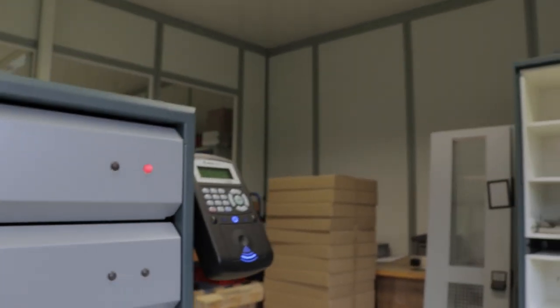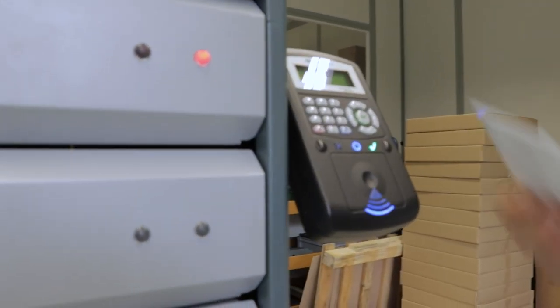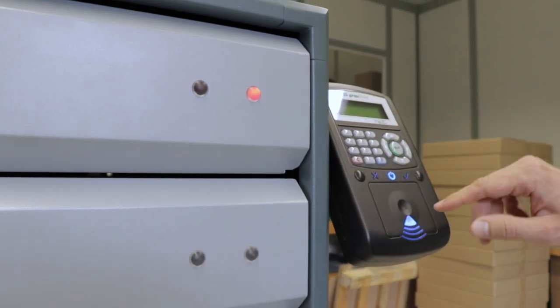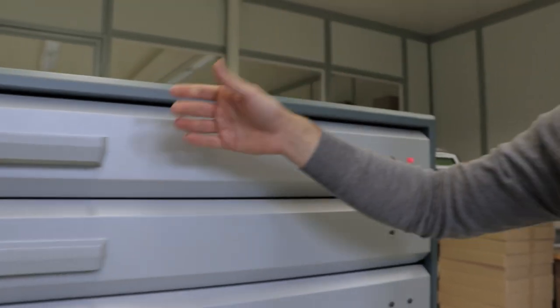Now if you want to access the rifle locker, it works like with all the other cabinets from us. You identify first, either with card or pin or both, and then you select the rifle that you're authorized to take. And now this opens up.